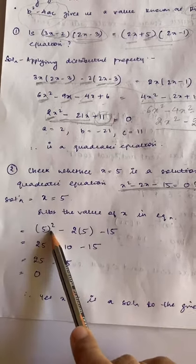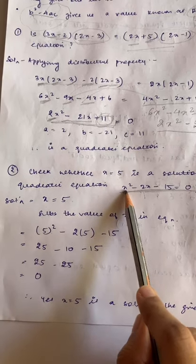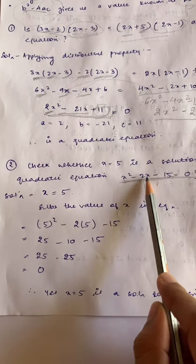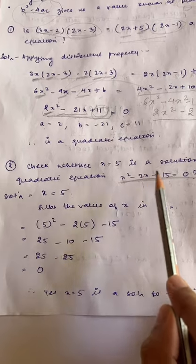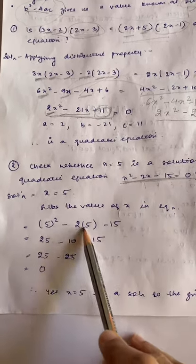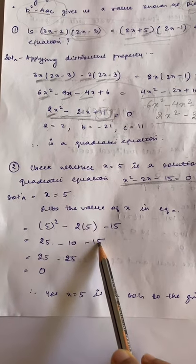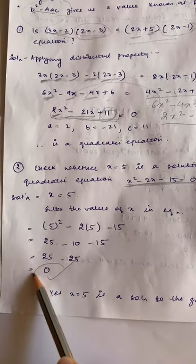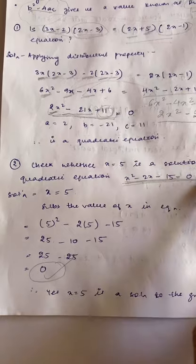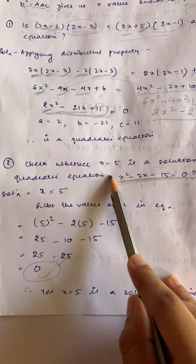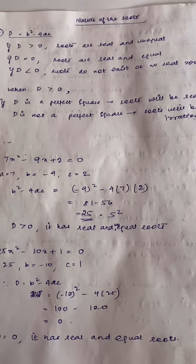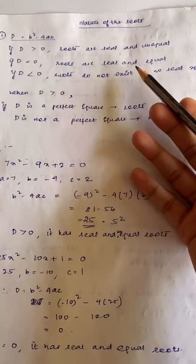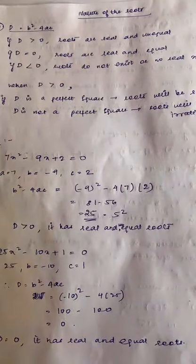Substituting x = 5: 5² - 2(5) - 15 = 25 - 10 - 15 = 25 - 25 = 0. Since we get 0, x = 5 is indeed a solution. Different quadratic equations can have different types of solutions, also called roots, and we are going to understand the nature or characteristics of these roots.